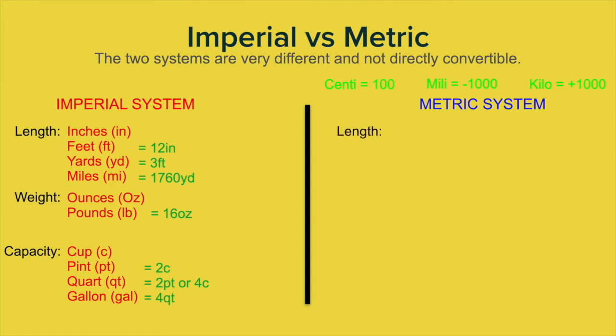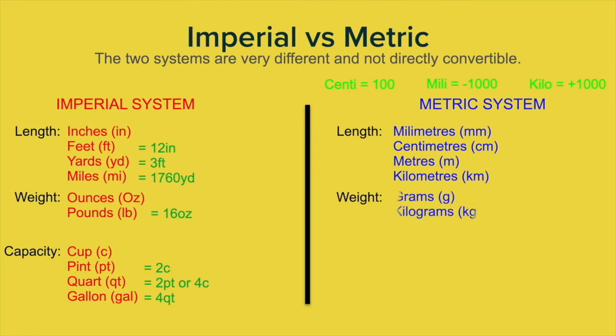Let's now have a look at the length of the metric system. First of all, we have millimeters. That's the smallest length we can work with. Next, we have centimeters. Then we have meters. And finally, kilometers. Let's have a look at weight. Again, we just have two that we can work with. So the first one or the smallest one is grams. And finally, kilograms.